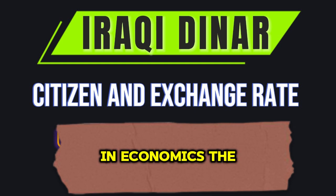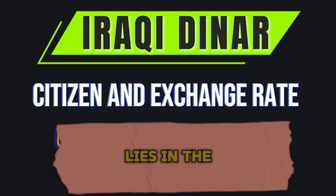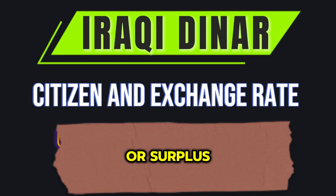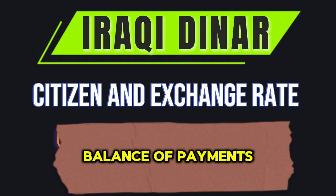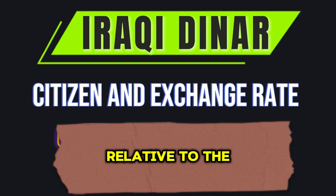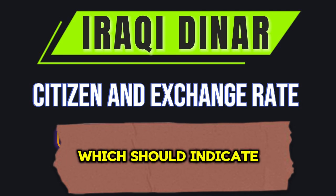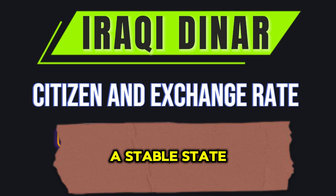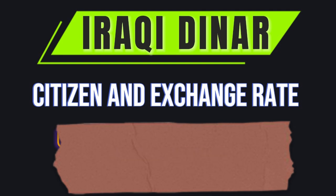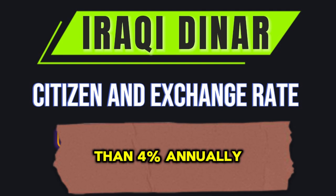In economics, the external value of a currency lies in the presence of a balance or surplus in the current account of the balance of payments relative to the gross domestic product, which should indicate a stable state at a minimum, not less than 4% annually.